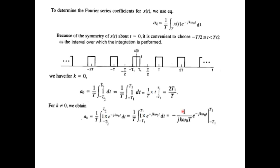So (1/jkω₀T)[e^(-jkω₀t)] with limits -t1 and t1. Putting in the two limits, this becomes e^(jkω₀t1) - e^(-jkω₀(-t1)). If you take the minus sign inside, this becomes minus and this becomes plus, and minus minus plus becomes positive and this remains negative.